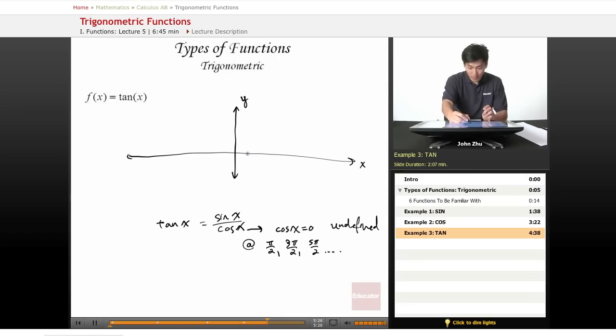So let's look at those points: π over 2, 3π over 2, and 5π over 2. So here is about π over 2. This point is undefined. And here we go, we have another undefined point.